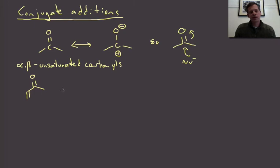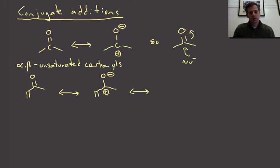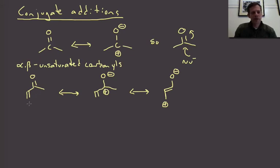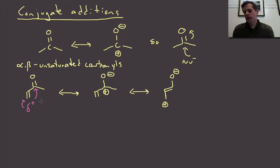This is a special functionality because if we think about the resonance form for this type of carbonyl, we could absolutely draw this resonance form just like we did above — so we might expect nucleophilic attack at that carbon. But now there's another resonance form because of that conjugated alkene, where we still have O-minus but now we have positive charge down at the beta carbon. That means the alpha-beta unsaturated carbonyl has delta-positive charge at two different carbons, so we have the potential to react with nucleophiles at two different places.